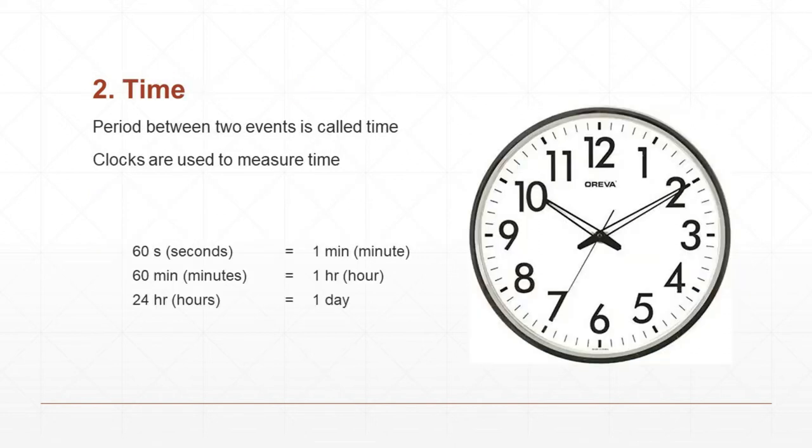The next topic we are going to learn that is time. The definition for time is period between two events is called time. Clocks are used to measure time. In a clock, there are three hands. One shows hour, another one shows minute, another one shows the second. These are the three hands.